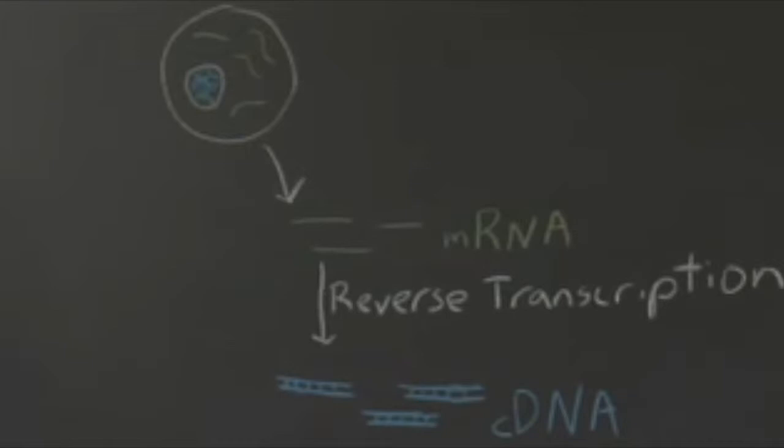Insulin is a protein our bodies use to regulate sugar levels. The bodies of people who have diabetes have trouble producing it themselves, but we can inject insulin as medicine. To get enough, we can use bacteria, but in a multi-step process. We begin by isolating a cell of interest — cells that contain the insulin gene. We isolate RNA from those cells and use reverse transcription to make cDNA of the gene of interest.